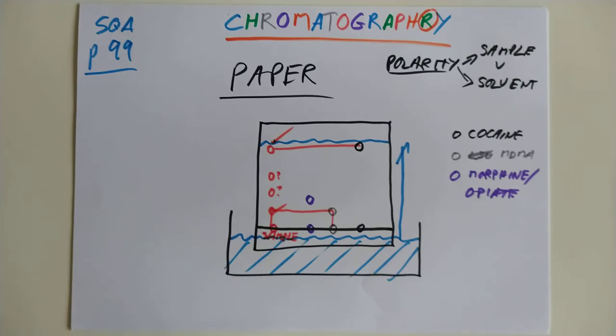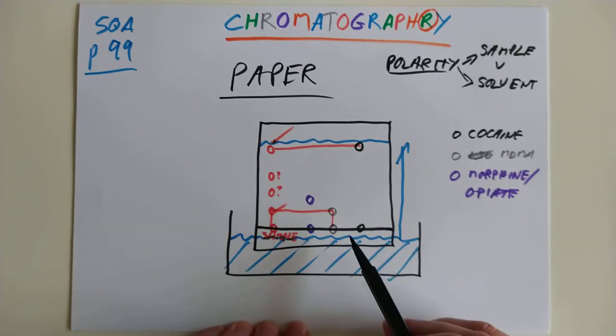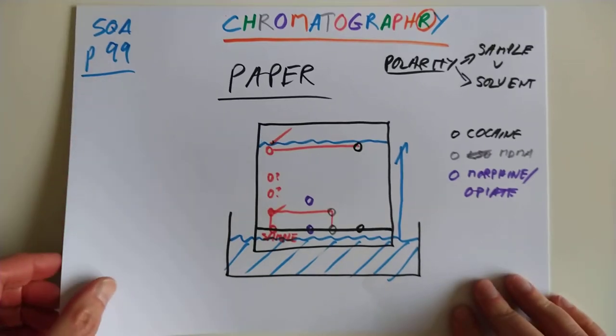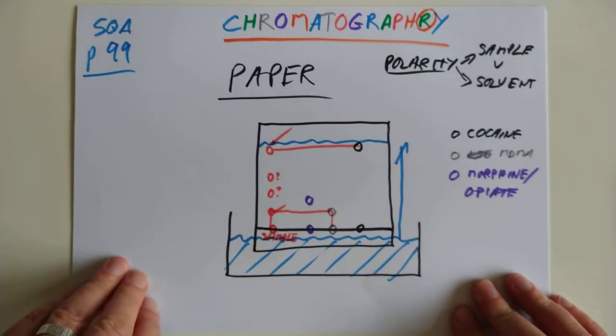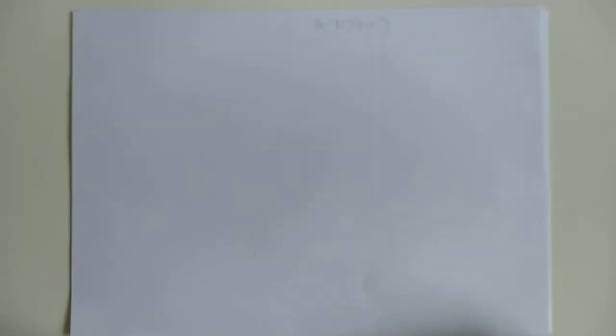The second thing that the SQA want you to be aware of is a method of separation. It's not polarity, it's actually molecular size. That's a very different type of chromatography, but it still enables you to separate complicated mixtures. So, it's still chromatography. Let me just pause this and I'll try and draw as best I can the setup and how that runs.